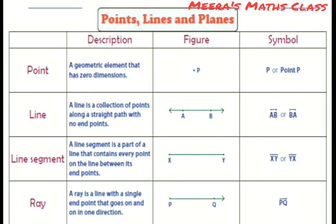Then the fourth one is ray. A ray is a line with a single end point that goes on and on in one direction.